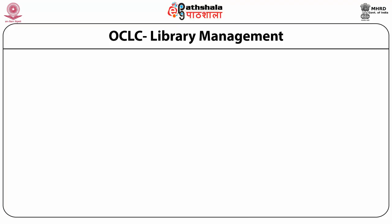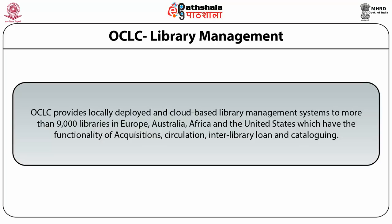OCLC provides locally deployed and cloud-based library management systems to more than 9,000 libraries in Europe, Australia, Africa and the United States, offering functionality for acquisition, circulation, interlibrary loan and cataloging. Library management systems are essential for any library to provide cataloging, online search and housekeeping operations. OCLC's library management systems are in use by various libraries worldwide.